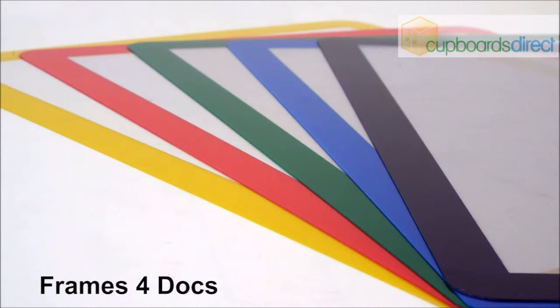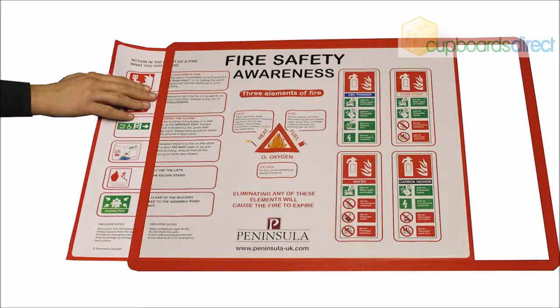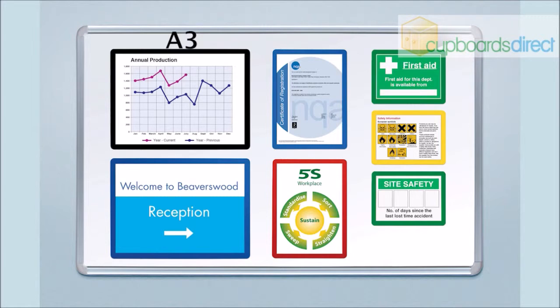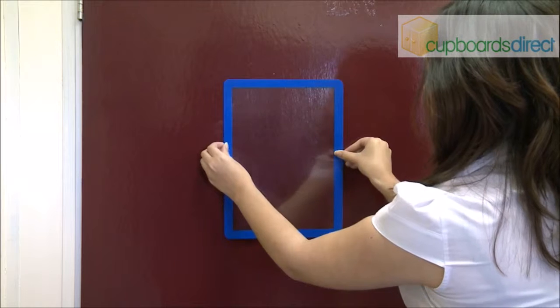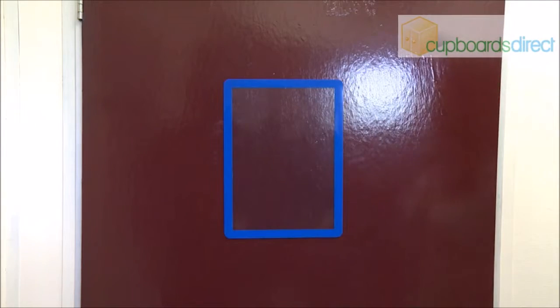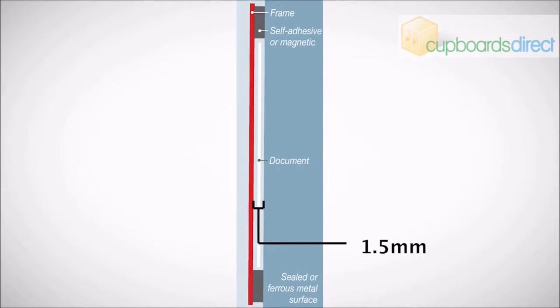Frames for Docs are a unique range of color-coded frames designed to make your messages come to life. They're available in A2, which are ideal for health and safety posters, A3, A4, and A5 paper sizes, and allow you to frame any message, sign, or chart in seconds that has a thickness of up to 1.5mm.